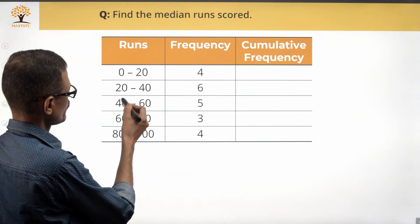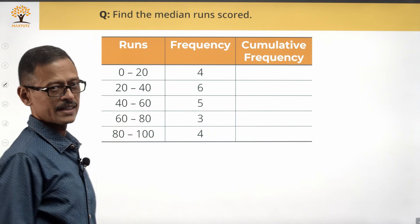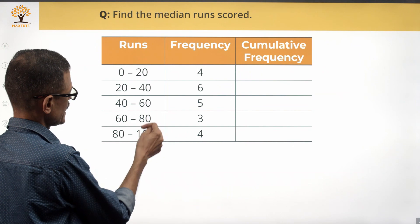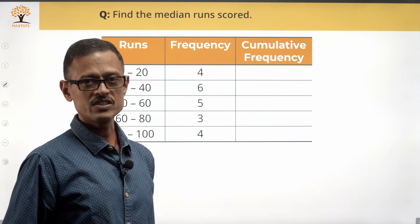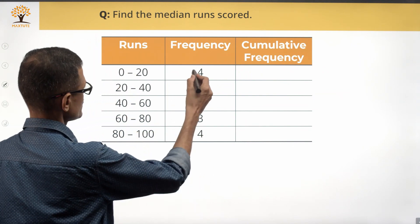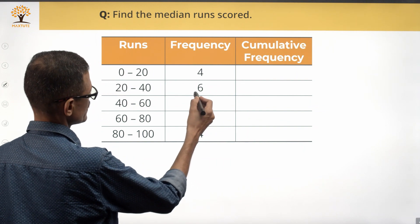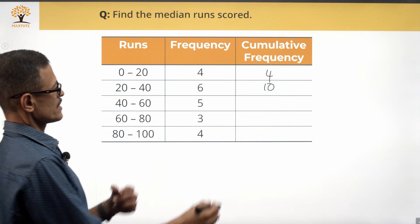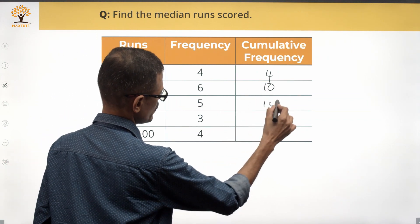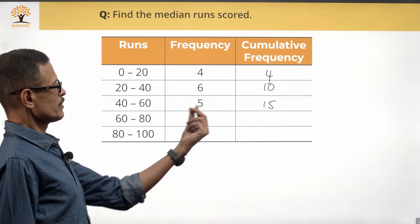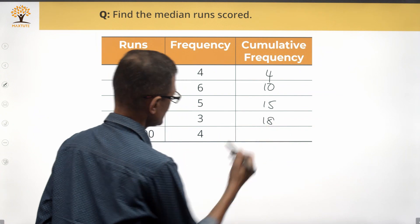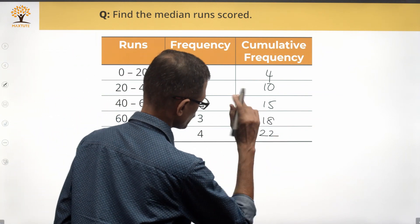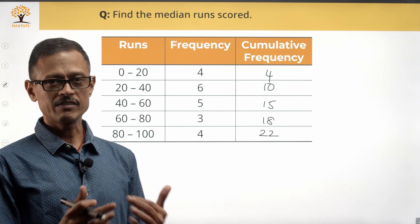So the class intervals are 0–20, 20–40, 40–60, 60–80, and 80–100. The cumulative frequency entries will be: less than 20 is 4; less than 40 is 6 plus 4, which is 10; less than 60 is 10 plus 5, which is 15; less than 80 is 15 plus 3, which is 18; and less than 100 is 18 plus 4, which is 22. This gives us our cumulative frequency table.